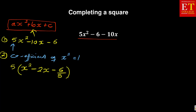When the 5 multiplies and expands inside, you are still going to get your 5x squared minus 10x minus 6. Then once you have simplified that, you can complete the square on the expression inside the bracket.